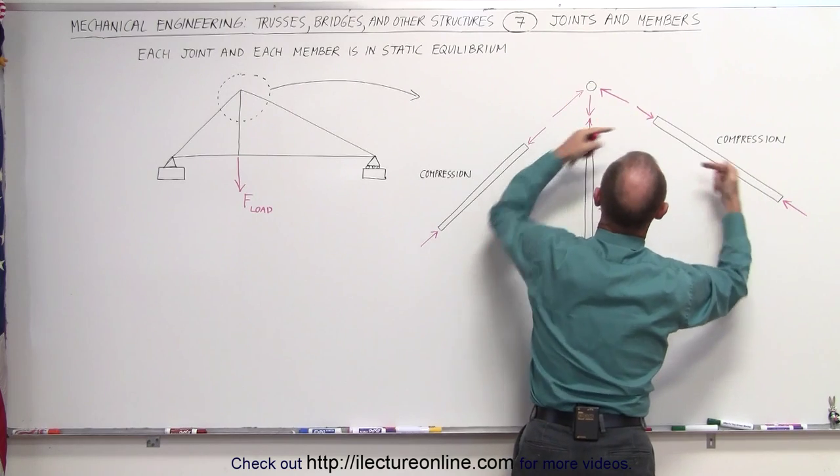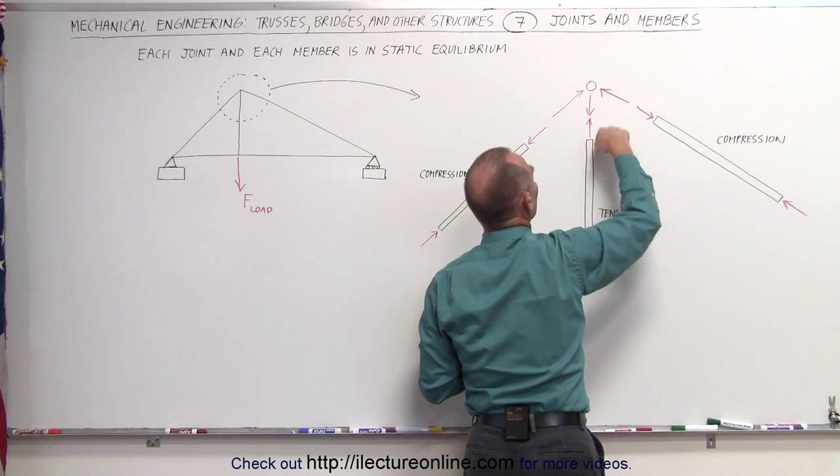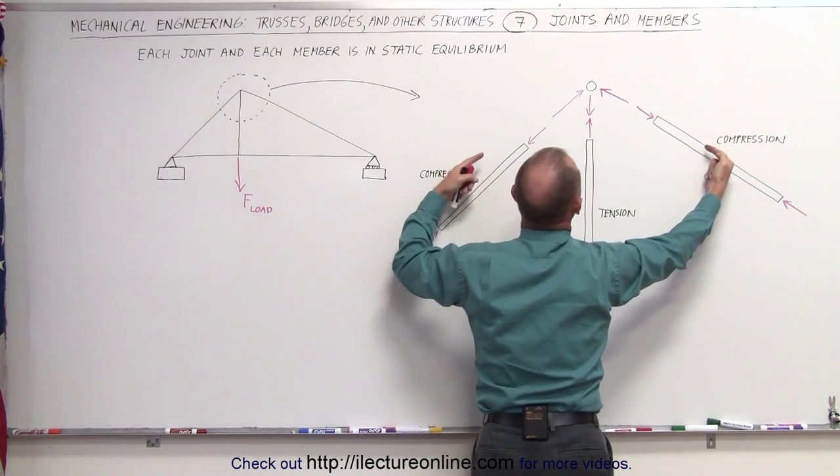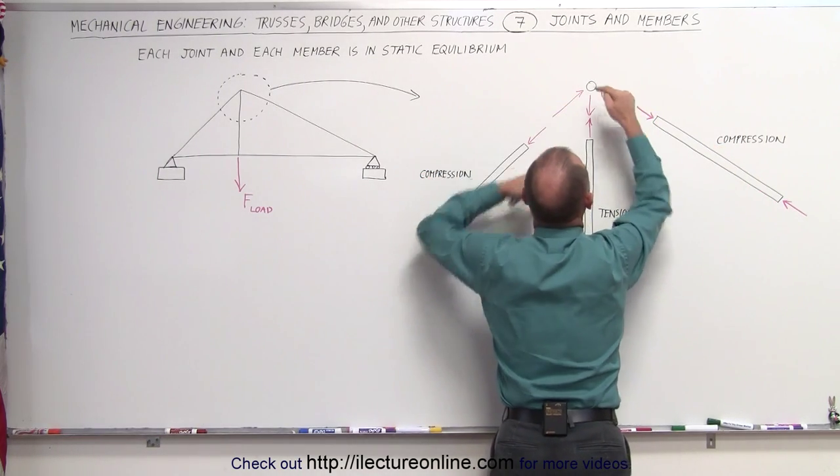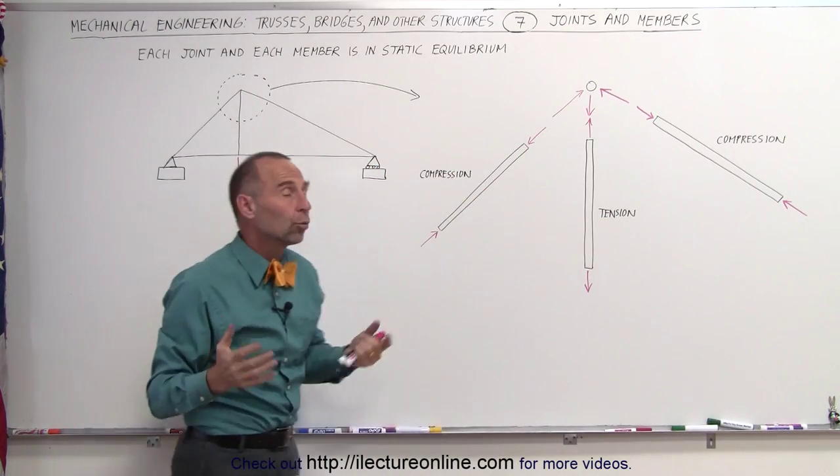For the two beams under compression here, this beam is under tension. You can see that this beam pulls down on this joint in this direction, and these two beams push up against the joint in that direction, keeping this in place. And that's how trusses work.